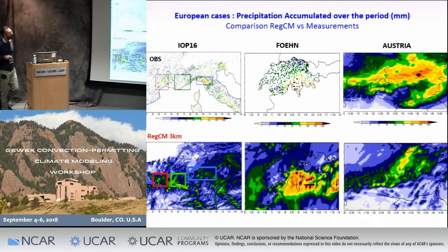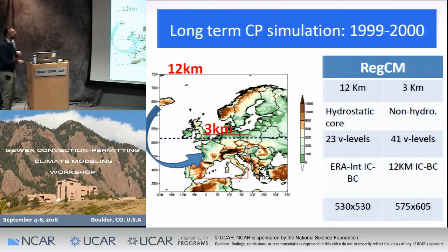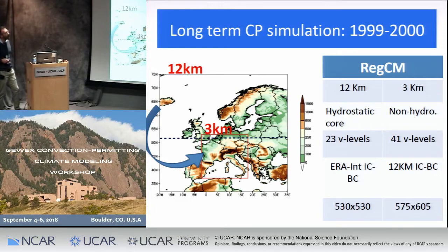For the second case — an orographic precipitation event over the south side of the Alps in Switzerland — the model is able to reproduce the event quite well, catching the maximum in this part of the domain. For the third case, the Austria case, which is also an orographic precipitation event affecting the north flank of the Alps, the model shows greater difficulties and underestimates all events over the domain. For this domain, we also performed longer simulations — at the moment, two years: 1999–2000 — using a 12-kilometer simulation to provide boundary and initial conditions for the convection-permitting simulation.